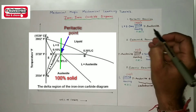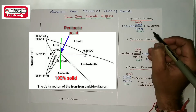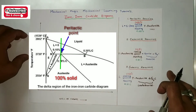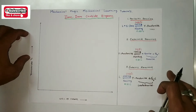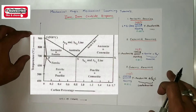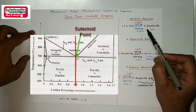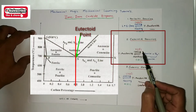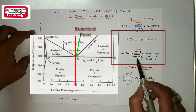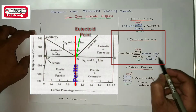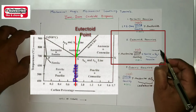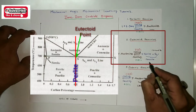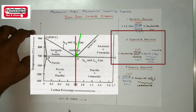Gamma austenite forms above 723 degrees centigrade as a 100 percent solid material of steel. The second reaction is the eutectoid reaction. Gamma austenite, on cooling at around 723 degrees centigrade and 0.8 percentage of carbon, converts into alpha ferrite plus Fe3C — that means cementite — forming a mixture called pearlite, found at 0.8 percentage of carbon.